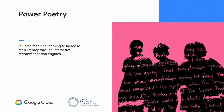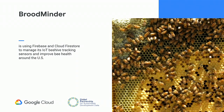Power Poetry—a shift towards the arts—is using machine learning to increase teen literacy through interactive recommendation engines. They've created proprietary machine learning algorithms to match teen poetry submissions with rap artists and American poets. Broodminder is another organization using Firebase and Cloud Firestore to manage IoT beehive tracking sensors and improve bee health around the US. The bee population is declining and facing hive collapse, which is concerning not only for biodiversity but also for our food systems, given the critical importance of pollinators for fruits and vegetables.